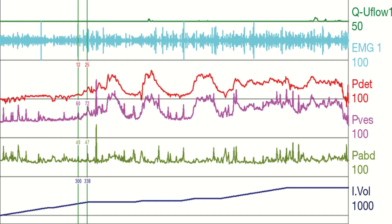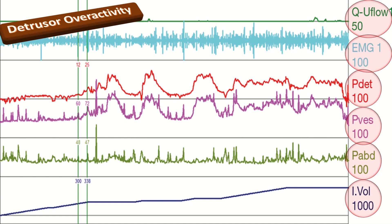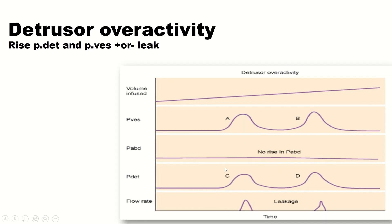This is a urodynamic graph showing detrusor overactivity. On the top we have maximum urinary flow, next comes electromyography, then the detrusor pressure, the vesical pressure, abdominal pressure, and the maximum volume the bladder can hold. In contrast, in urodynamic stress incontinence there is a rise in abdominal pressure and vesical pressure with a leak. In detrusor overactivity there is a rise in detrusor pressure and vesical pressure, plus or minus leak.